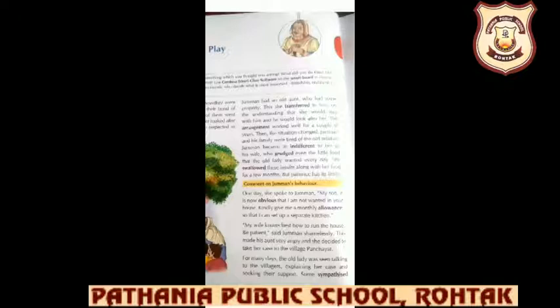She goes and speaks to Juman, saying: 'My son, it is now obvious that I am not wanted in your house. Finally give me a monthly allowance so that I can set up a separate kitchen.' Juman replied shamelessly, 'My wife knows best how to run the house. Be patient.' This made his aunt very angry and she decided to take her case to the village panchayat. Juman is behaving in a very arrogant manner — he does not listen and says she is making unnecessary arguments. Now the old lady is going to make her complaint to the panchayat.